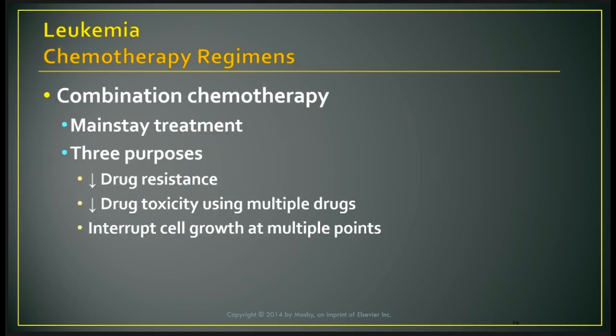Combination chemotherapy is the mainstay of treatment. Its purposes are to decrease drug resistance, decrease drug toxicity through multiple drugs, and interrupt cell growth at multiple points depending on the cell's phase — whether in a resting or active phase. Different types of chemotherapy hit cells at those different stages to destroy and eliminate them.